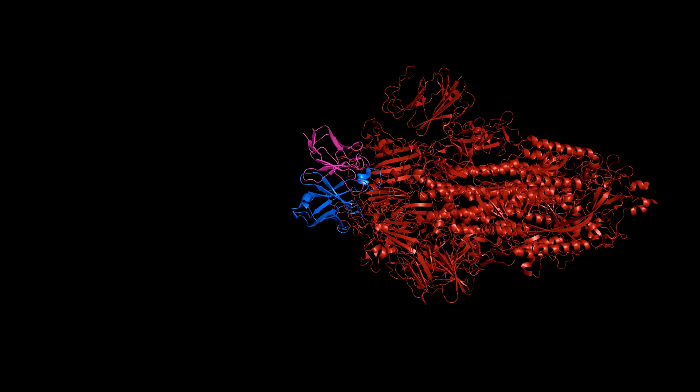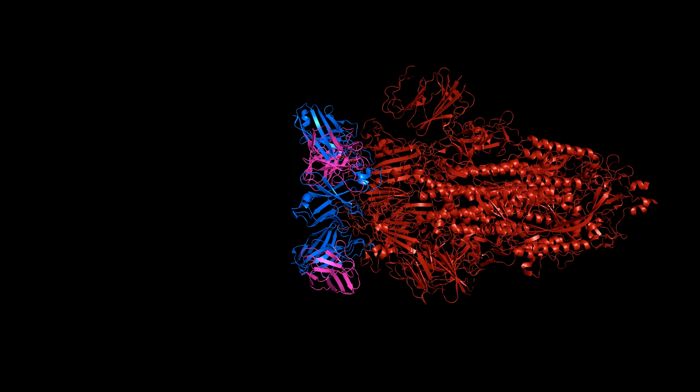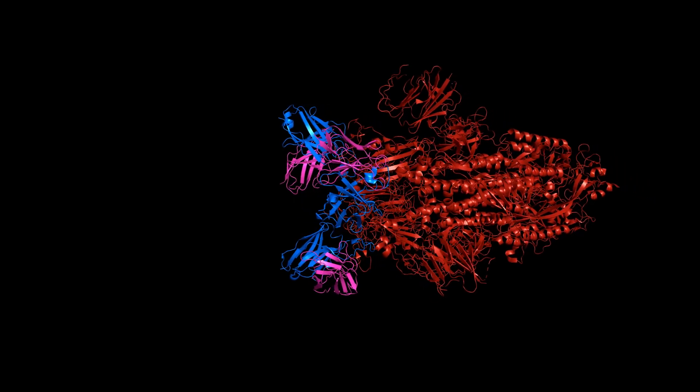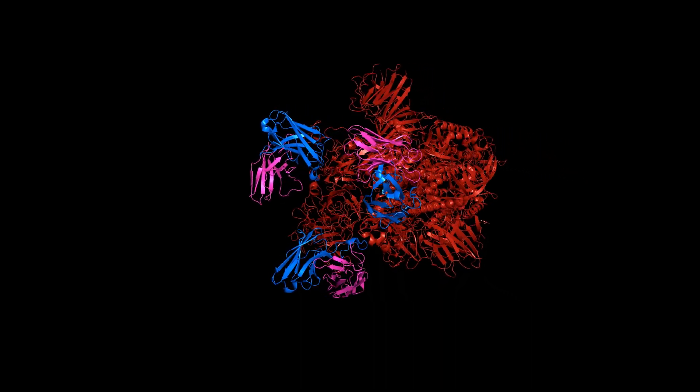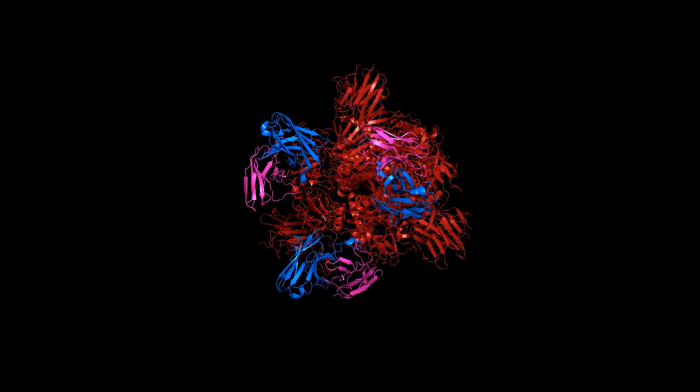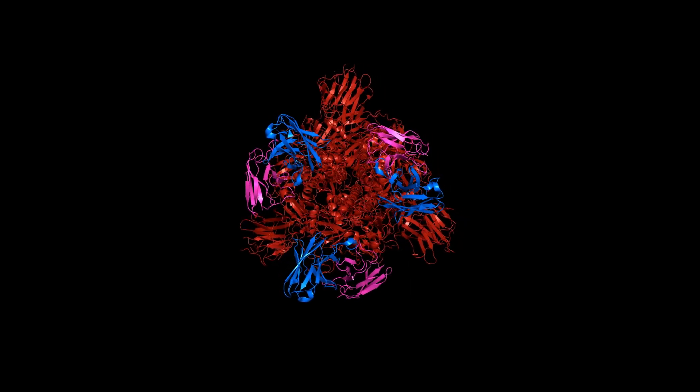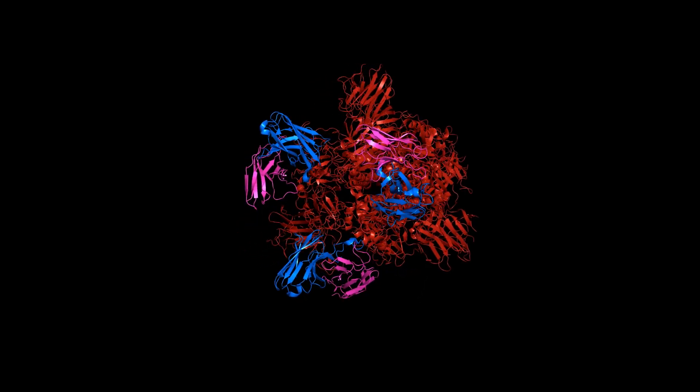In this structure, there are actually three FABs bound in three different regions of the spike protein. This particular antibody binds spike in an inactive conformation, preventing it from changing to the shape it needs to adopt to infect cells.